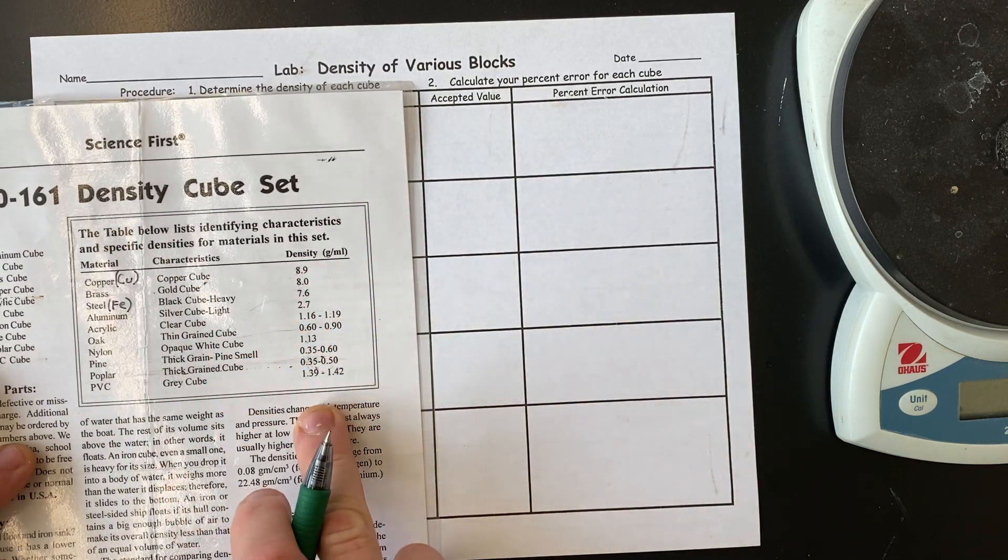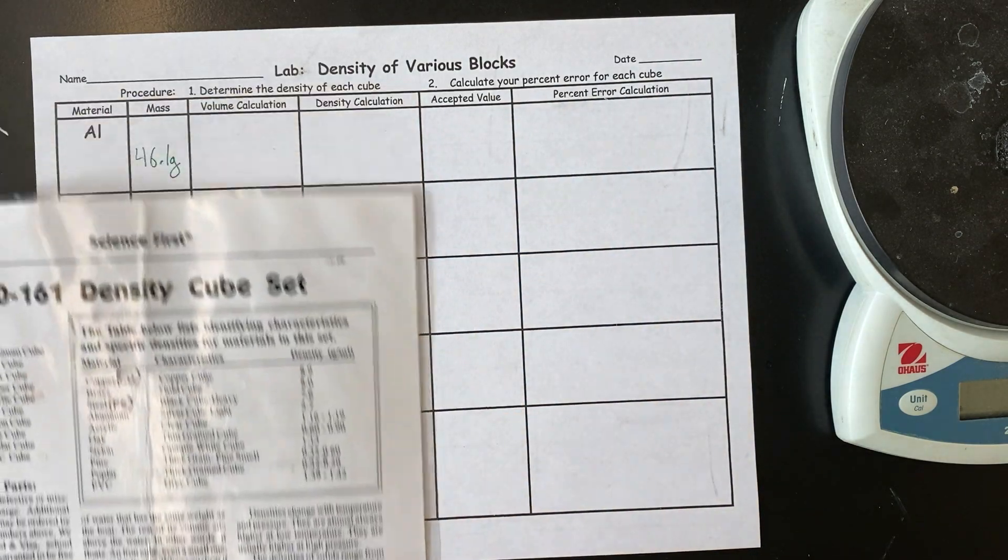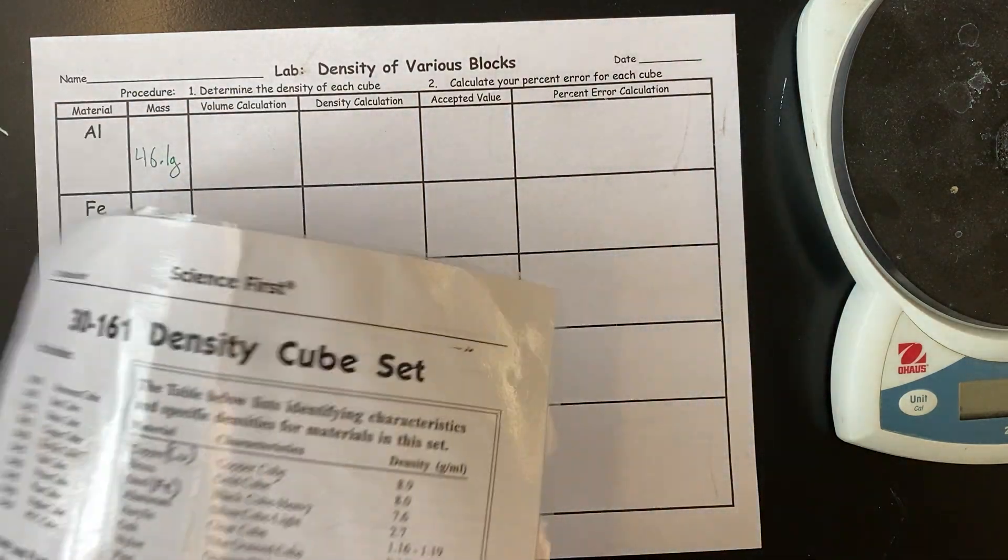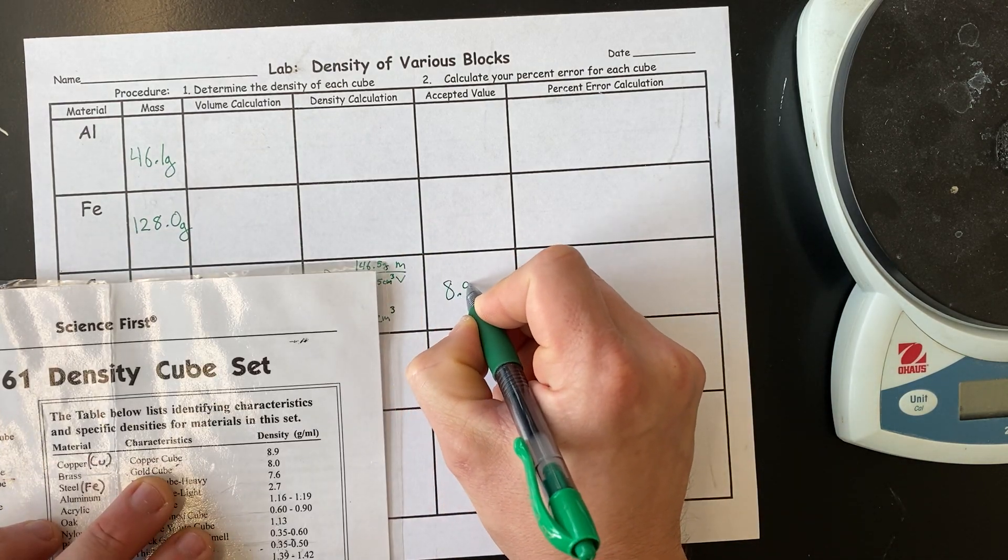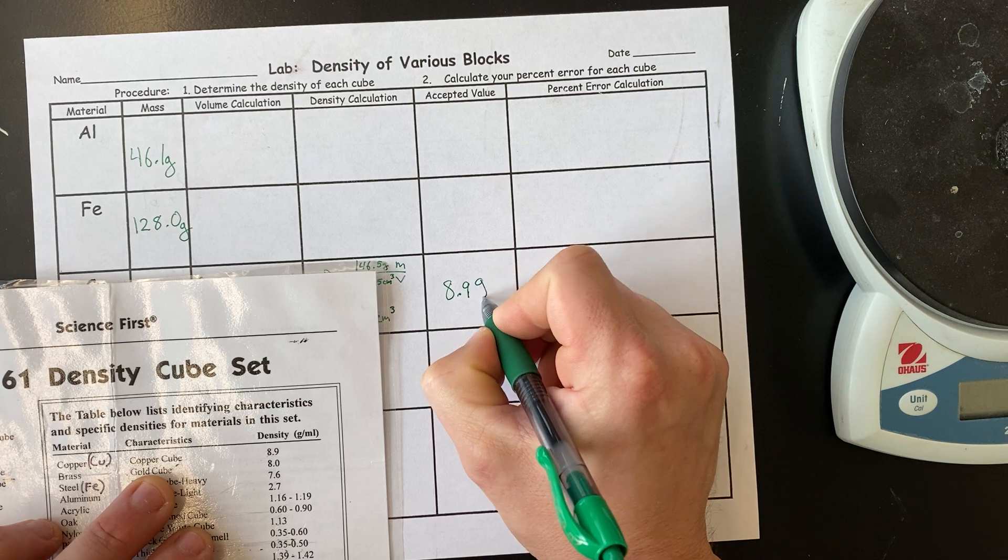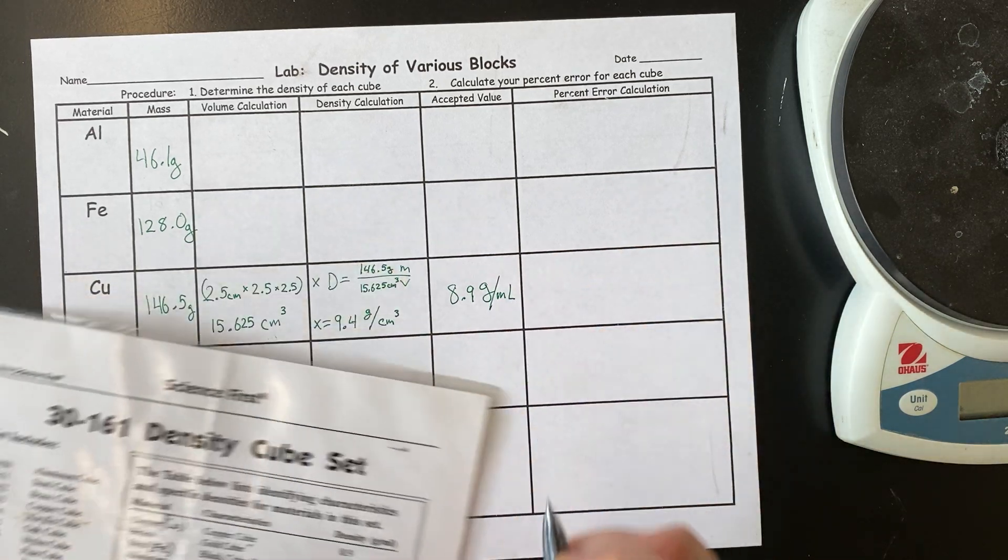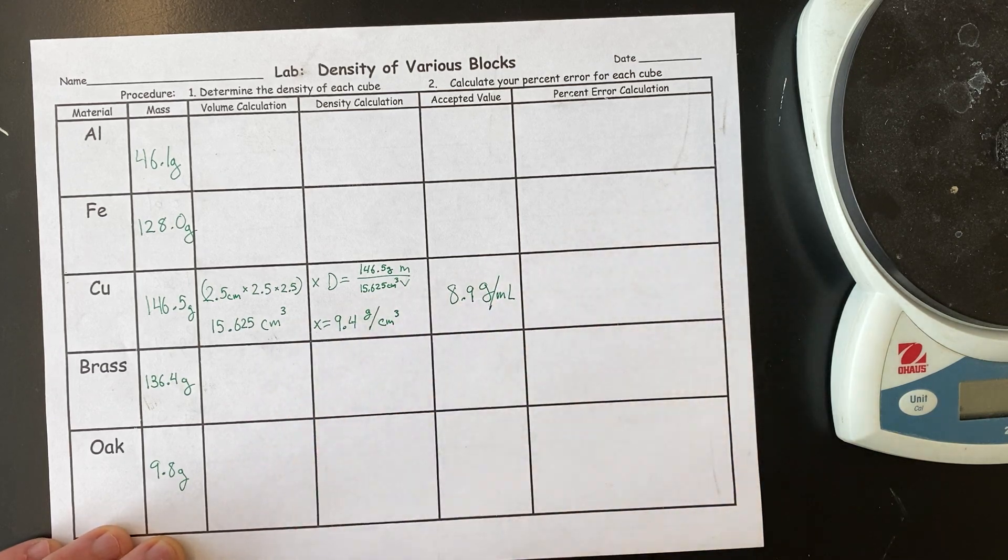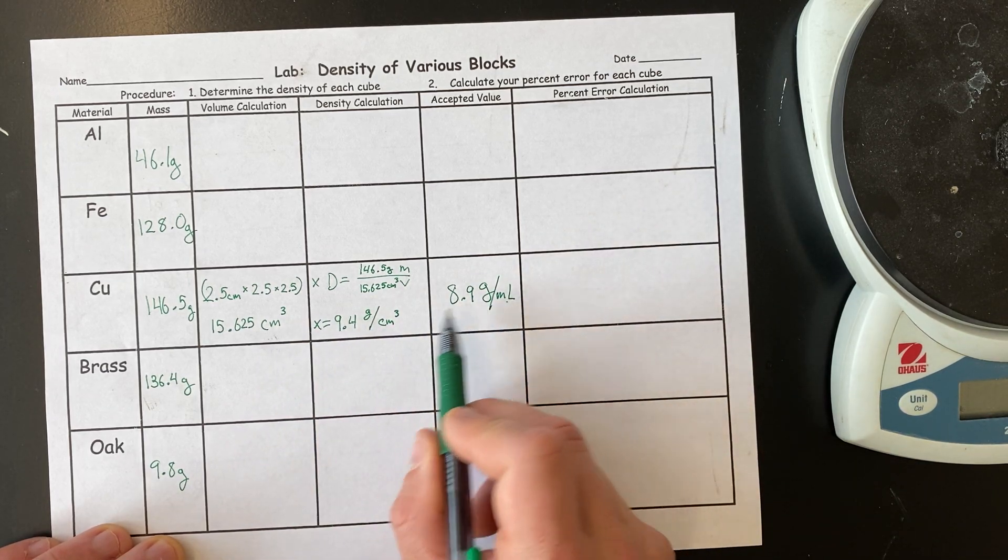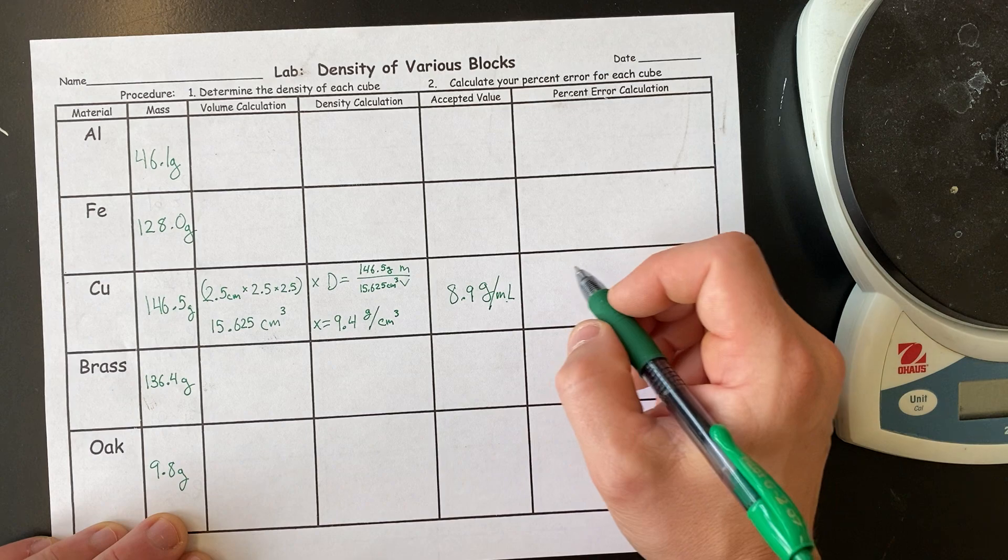So, you can then write these numbers. They go here. And then you're going to do a percent error. So, for copper, my copper is, the density should be 8.9 grams per milliliter. Now, hopefully we remember our chemistry. A milliliter and a cubic centimeter are the same thing, so it doesn't matter if I write this or that. And now I'm going to set up my percent error.